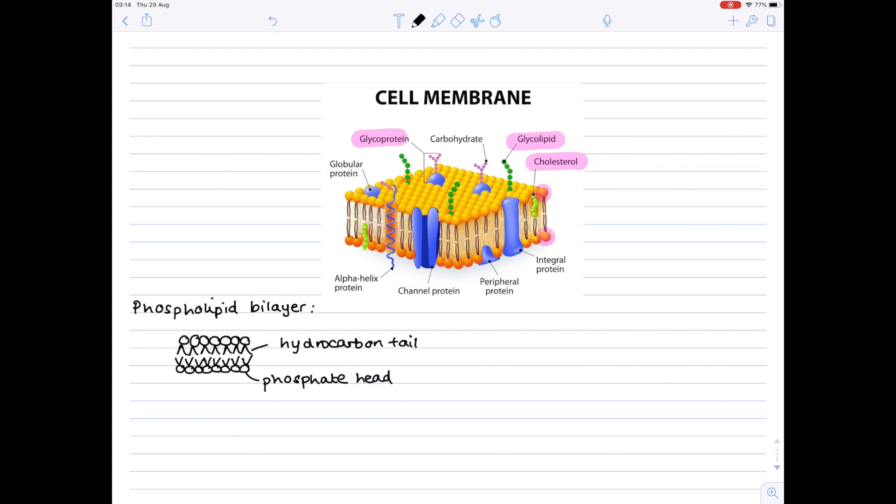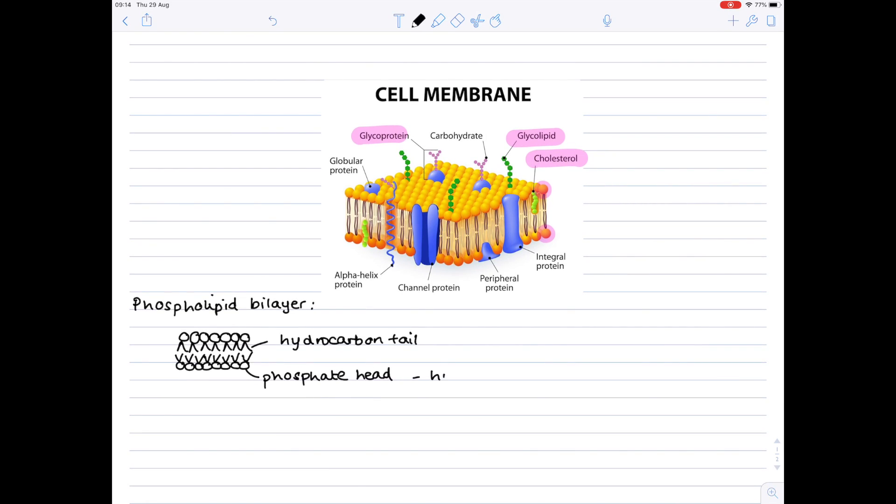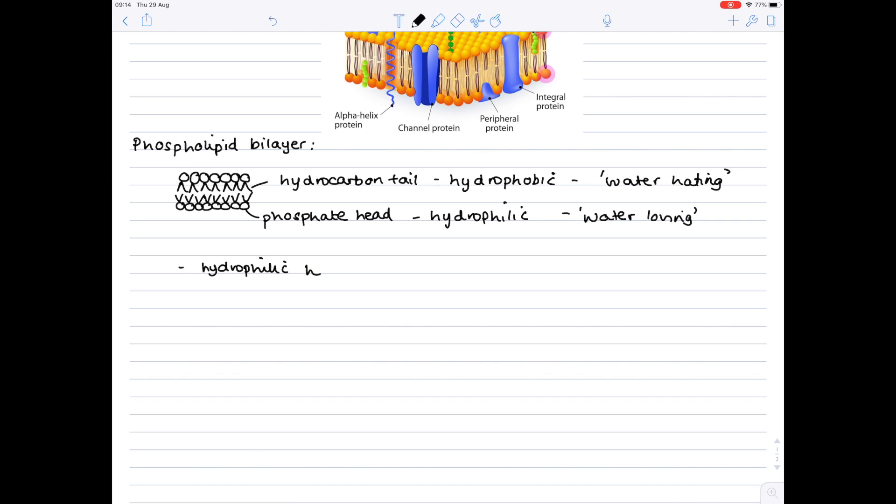Looking at their properties now, why do the tails point inwards? Why do the phosphate heads point outwards? Well, it's all to do with their properties in water, and it's because the head is hydrophilic, which means that it is water-loving. The tails are hydrophobic. If you're phobic to something, you hate it. Hydro meaning water, so they're water-hating. So they effectively repel against the water to hide themselves, so they just touch other tails, whereas the phosphate heads love water, so they point outwards. The hydrophilic heads of both layers point outside the cell surface membrane because they are attracted to water.